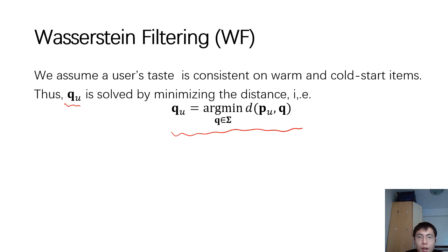Here, this constraint means q should be a probabilistic distribution.